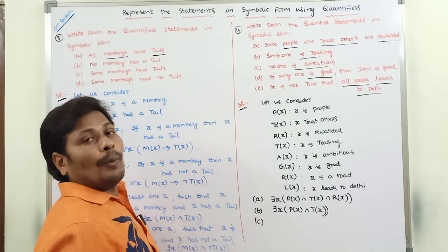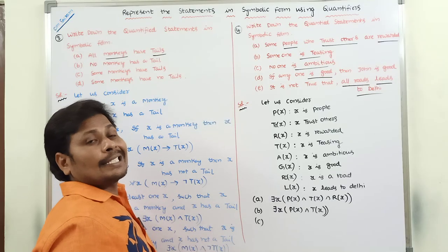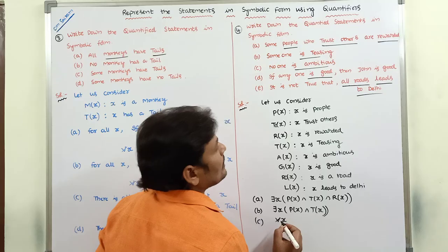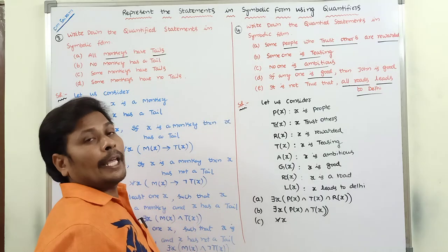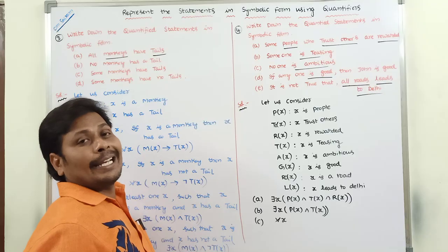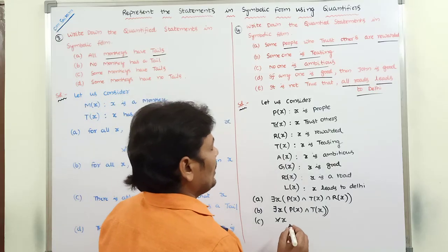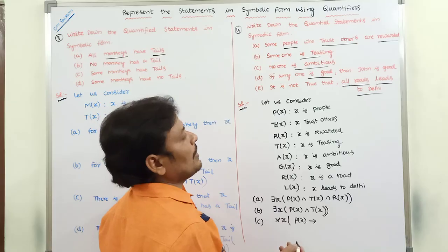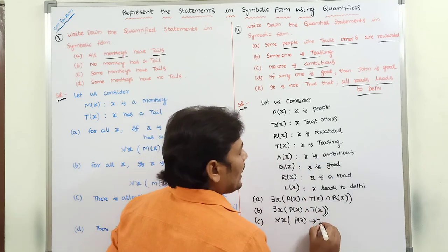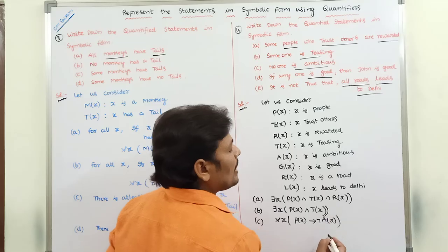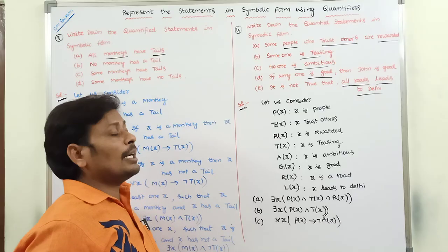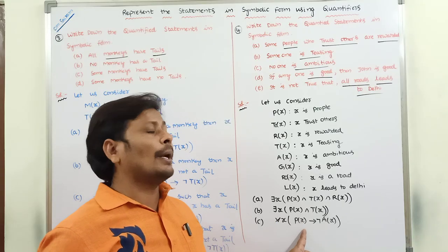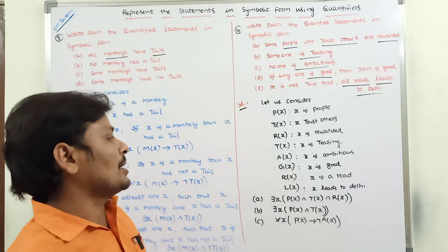Third statement: 'No one is ambitious' means everyone is not ambitious. For all X, if X is a people, then X is not ambitious. In symbolic form: for all X, P(X) implies negation A(X). Negation of A(X) is not ambitious.